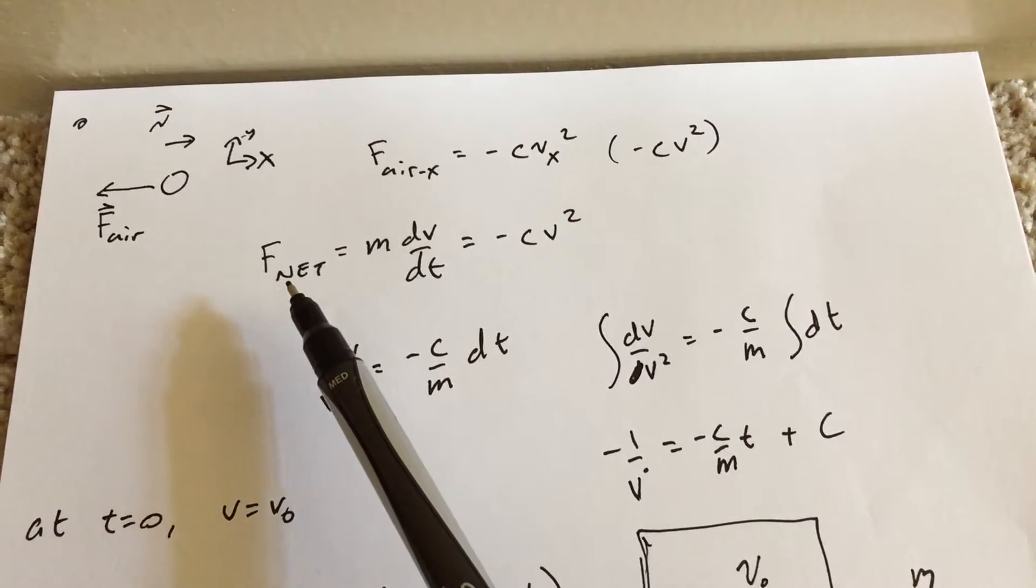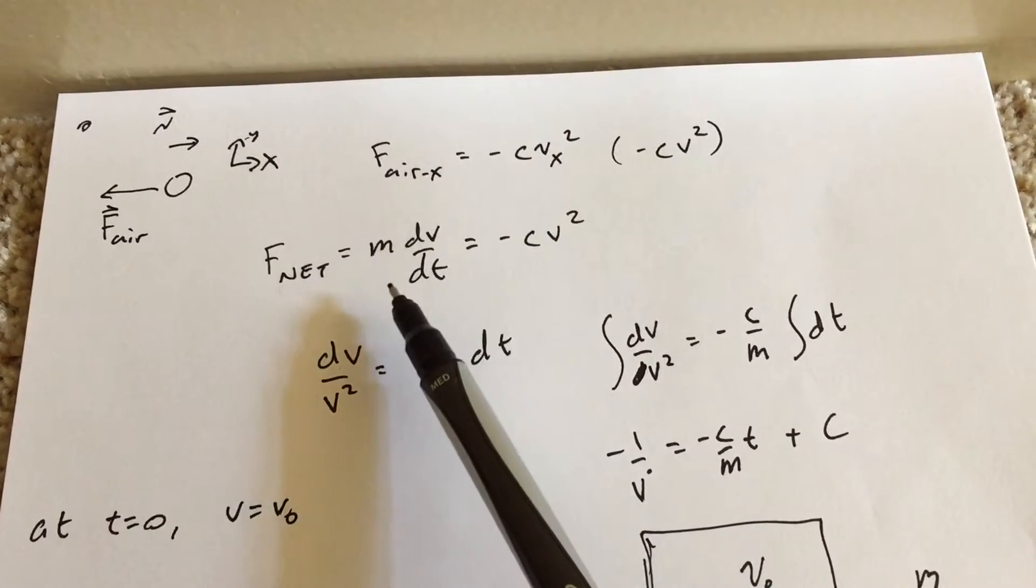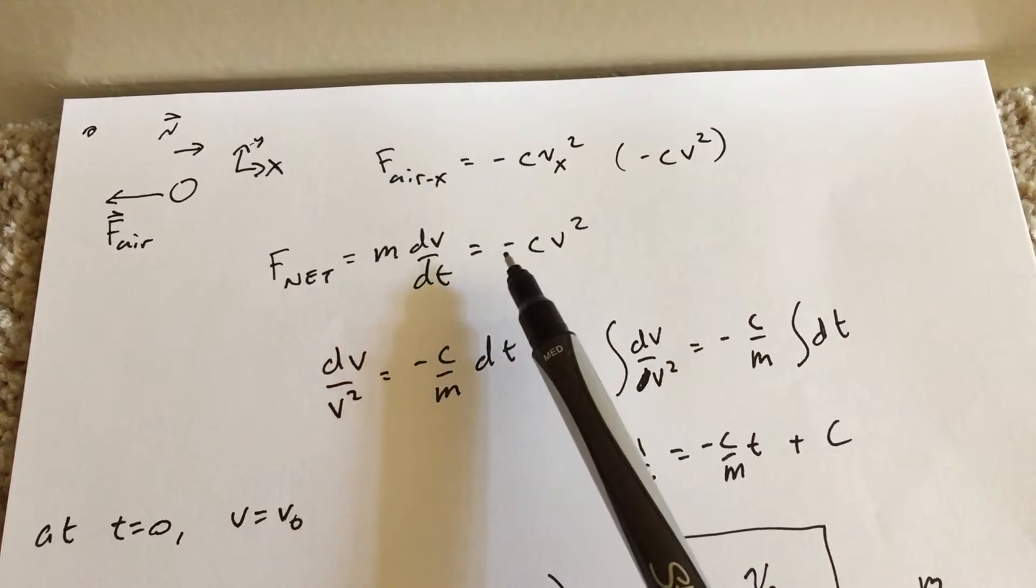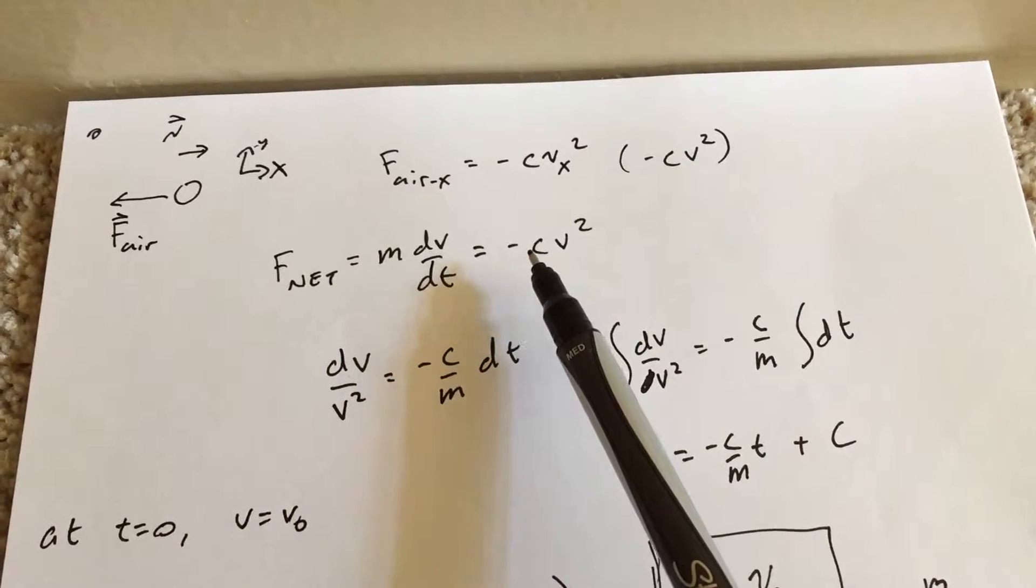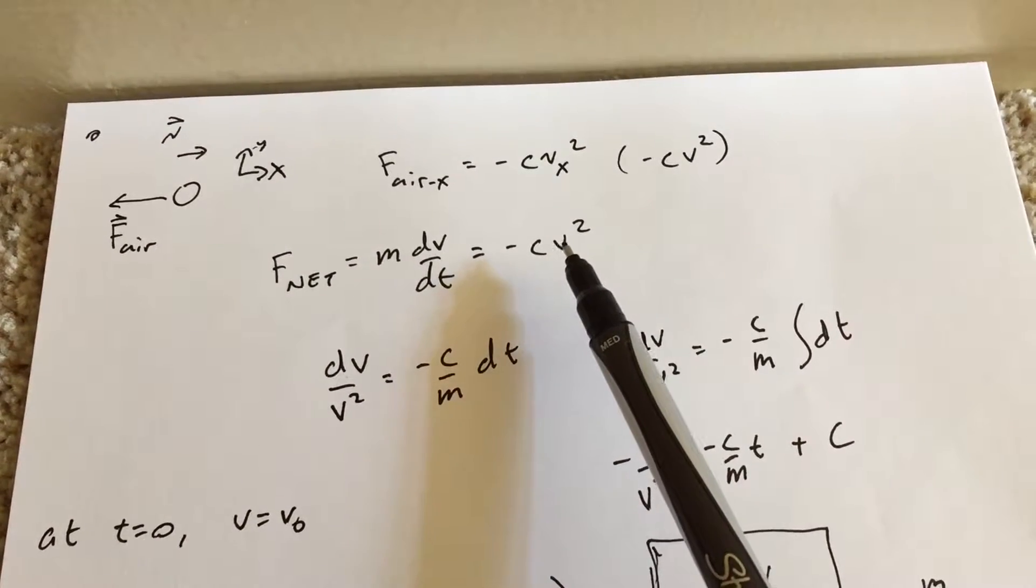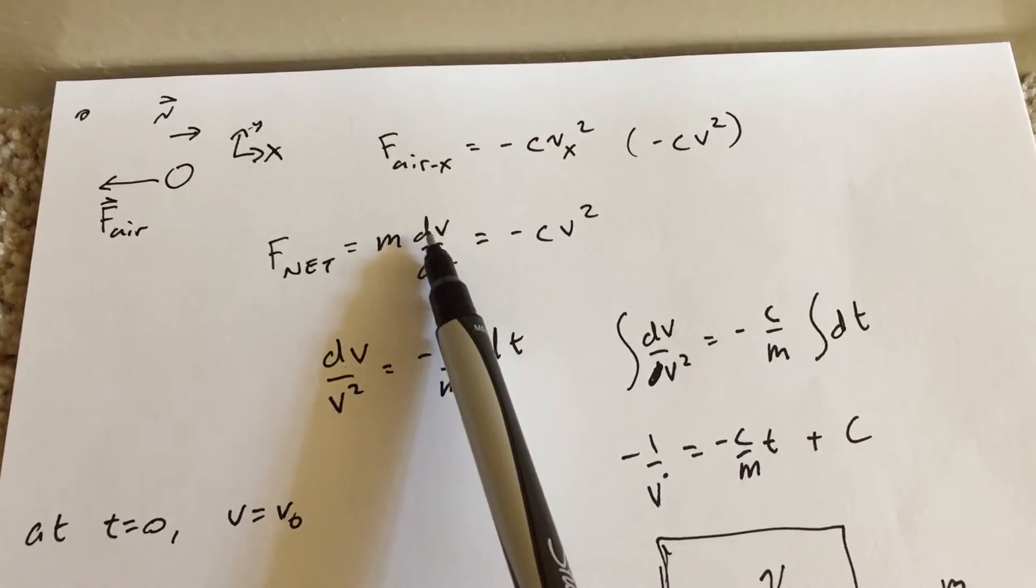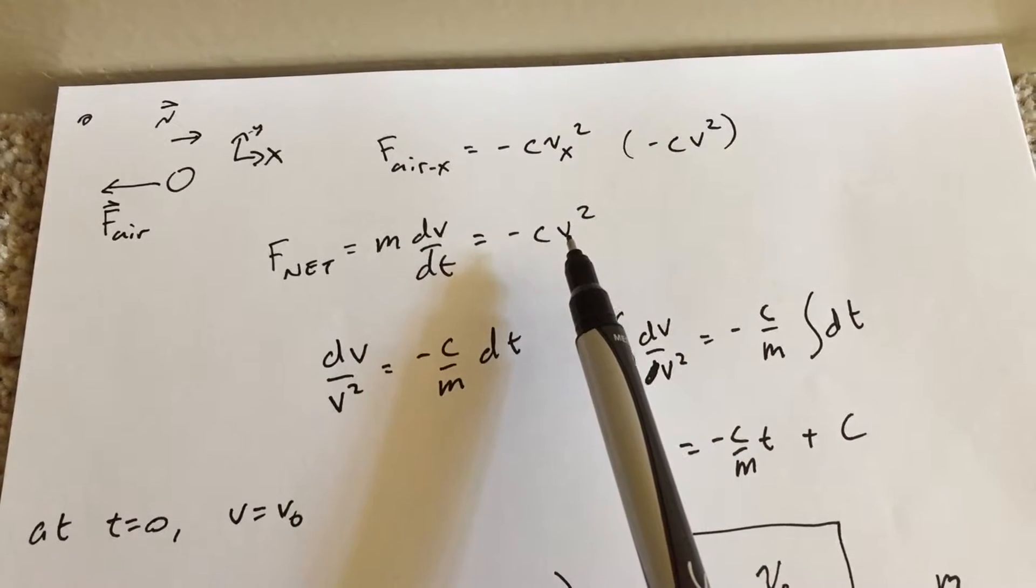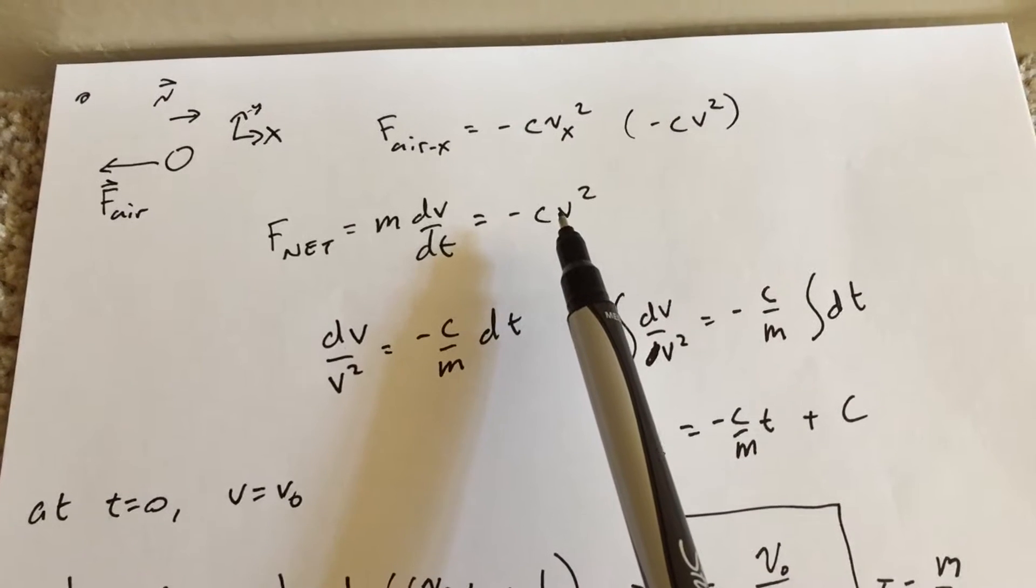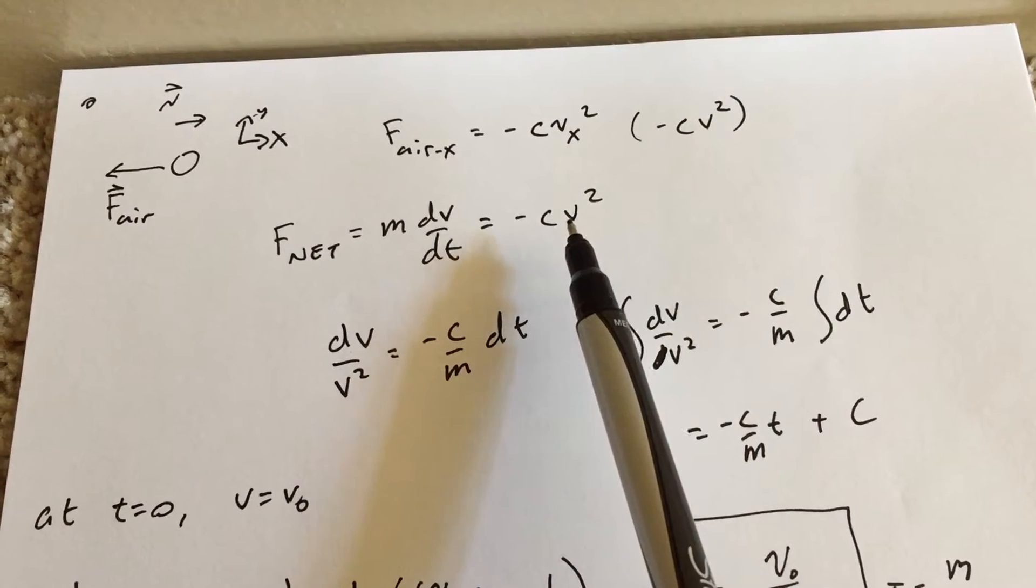So Newton's second law says that the net force is mass times the acceleration, or the derivative of the velocity with time. And there's only one force, so we get ma equals negative cv squared. So here we have a differential equation, because on this side I have the derivative of velocity, but this side I have the velocity. So you can't just solve it like you would in introductory physics. We need to do something a little different.